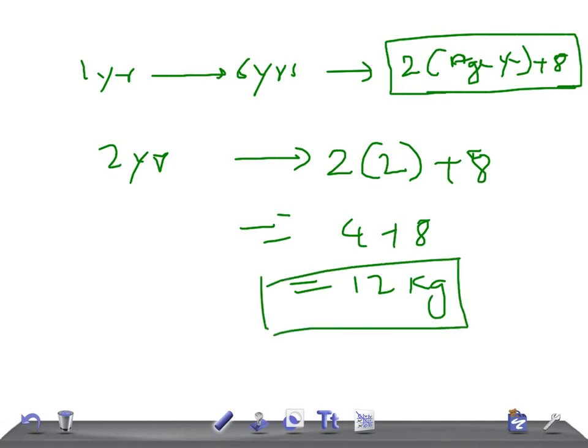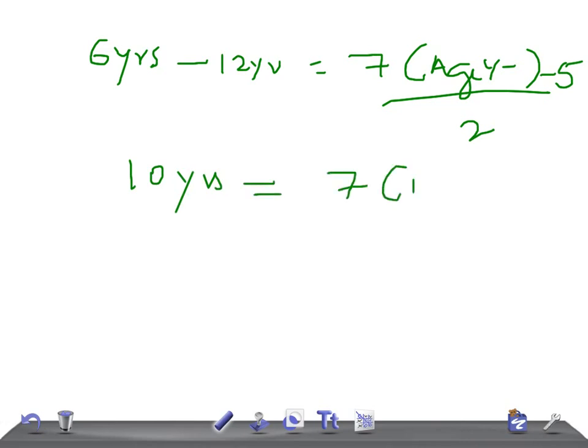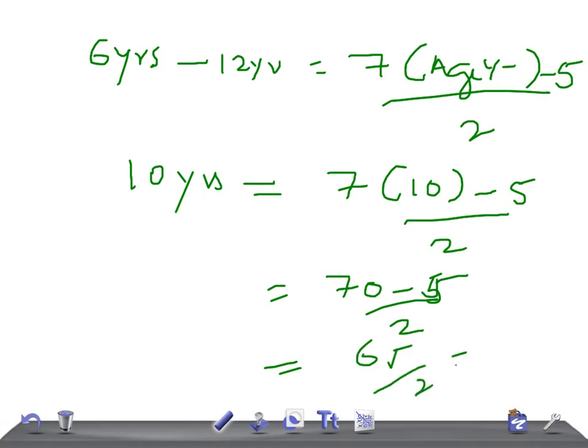From six years to twelve years, the formula is 7 multiplied by age in years minus 5, divided by 2. For example, if the patient is 10 years old, it's 7 times 10 minus 5 divided by 2, which equals 70 minus 5 divided by 2, giving us 65 divided by 2, which is 32.5 kg.